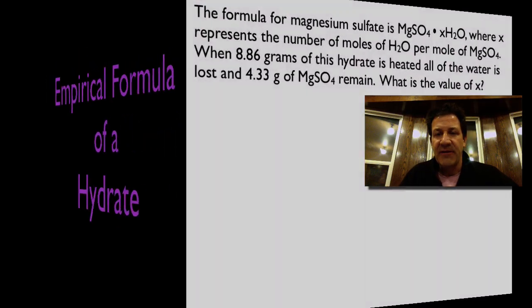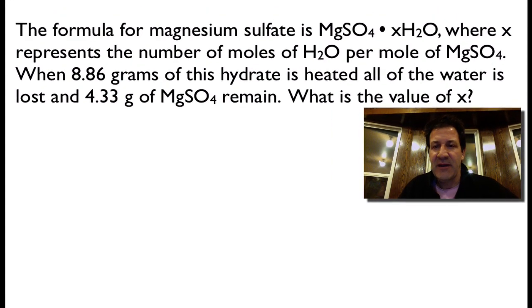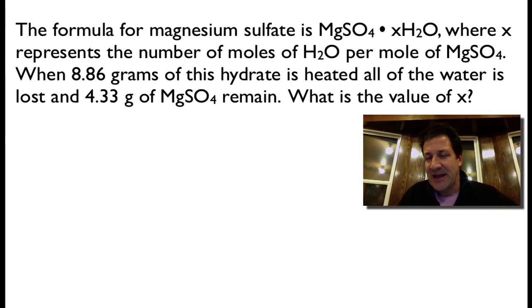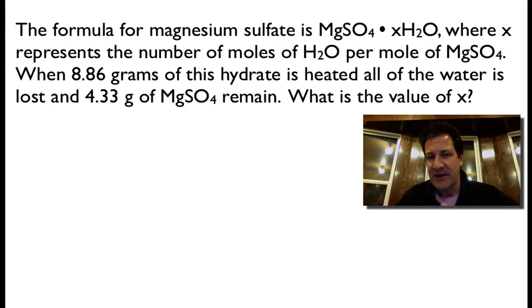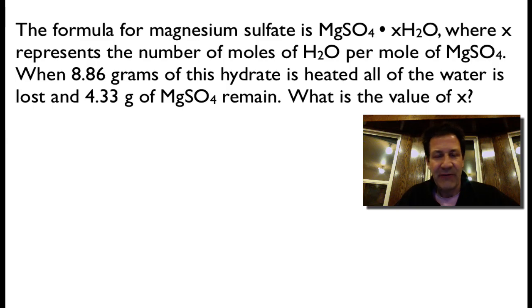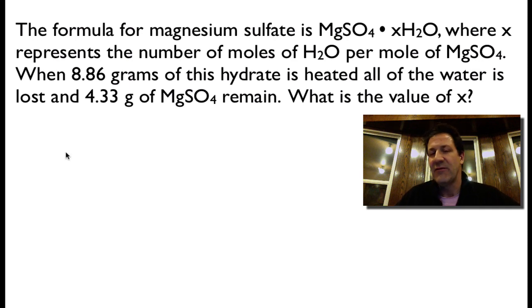In today's video I'm going to show you how to calculate the empirical formula for a hydrate. The formula for magnesium sulfate is MgSO4 plus XH2O, where X represents the number of moles of water for each one mole of magnesium sulfate. We have 8.86 grams of the hydrated compound, and we're going to heat it to drive off the water. What remains is 4.33 grams of just the dehydrated magnesium sulfate. We want to know the value of X, which tells us the ratio of the number of moles of magnesium sulfate to water.